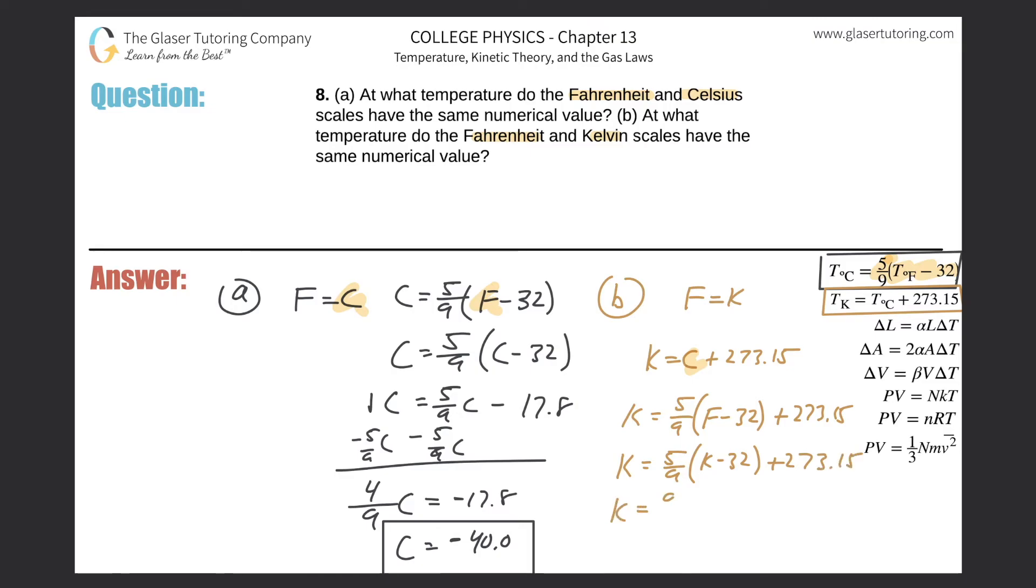So this is K is equal to five ninths, five ninths K minus then, that's the same value we found over here, minus the 17.8, plus then the 273.15. Alright, so I'm going to combine these two terms. I'm also going to subtract the five ninths K on over.